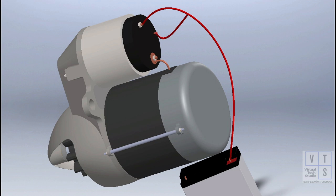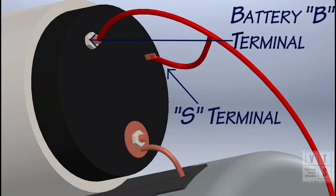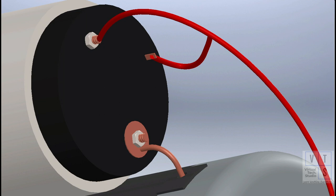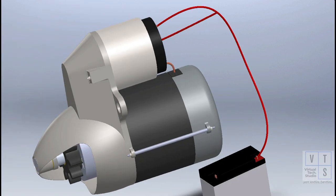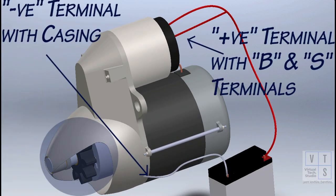Connect the battery positive terminal with B and S terminals of magnetic switch as shown. Connect the negative terminal of the battery with the casing. The pinion should first move forward and then revolve.